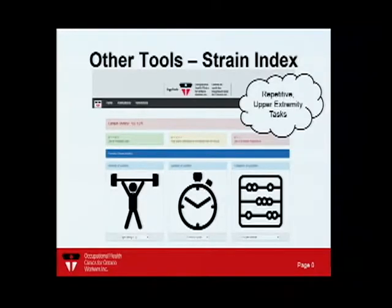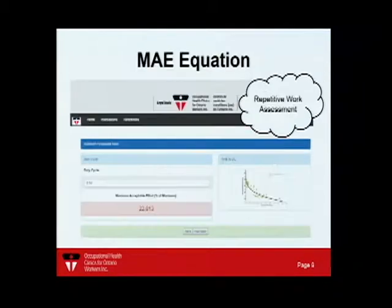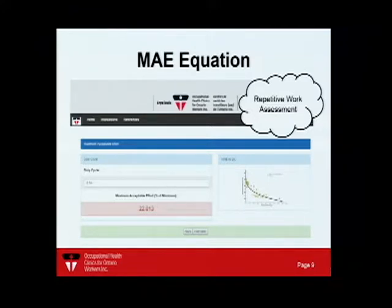The Strain Index is primarily used for repetitive upper extremity tasks. The MAE equation, developed by Dr. Jim Potman, assesses repetitive work to determine, based off the duty cycle of your task, what's an acceptable effort level.